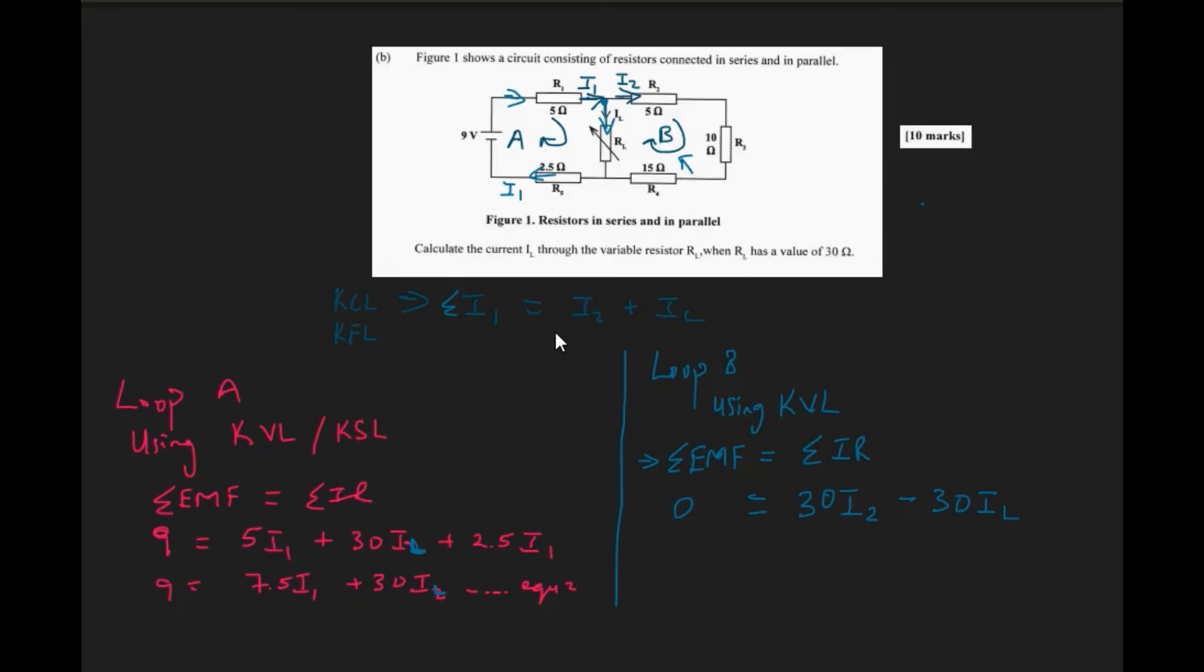What I went ahead and did was to count up all of the resistance, which ended up giving me 30 ohms. And because it's the same current flowing through those resistors, I could just factor out i2. So this is where we have 30i2.